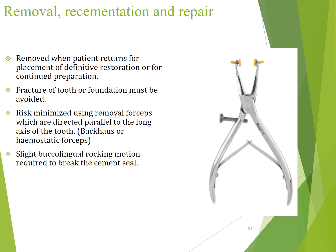Coming to removal, recementation, and repair: the provisional can be removed in certain cases, but care must be taken that the tooth or foundation does not fracture during removal. A forcep — known as the back-house or hemostatic forcep — can be used to remove it. A slight buckling or rocking movement is required to break the cement seal, or alternatively a probe can be used.